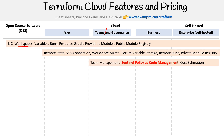Once we get into cloud, we get team management, Sentinel policy as code management, and cost estimation. The reason Sentinel is highlighted in red is because on the exam it could ask at what level Sentinel policy is available — it's available from teams and governance all the way to enterprise, not from the basic teams tier.